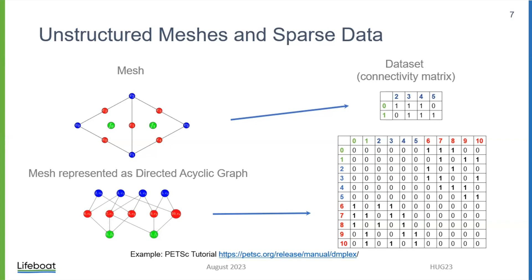A mesh can also be represented as a directed acyclic graph where all elements are numbered, and the connectivity matrix describing that directed acyclic graph will be sparse. I want to learn more about whether this can really help with the storage of meshes, because one would think that when you add another point and it becomes four edges, you disturb your mesh but you do not need to rewrite the whole mesh — you can just add one element in the connectivity matrix.